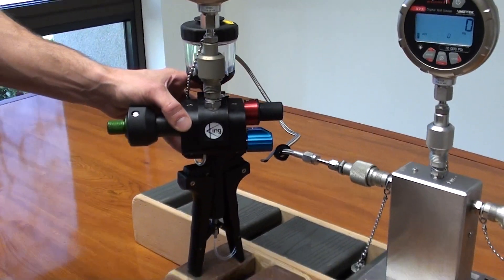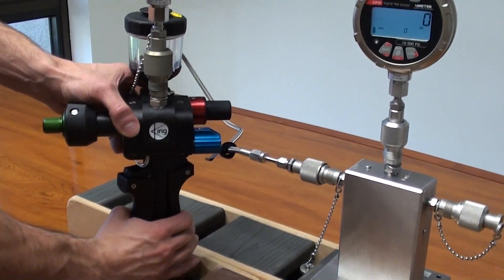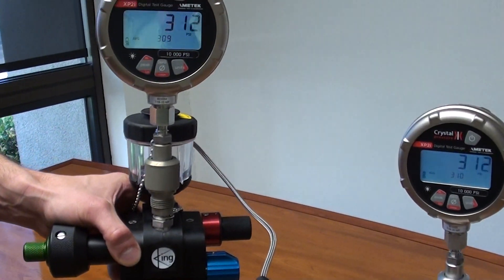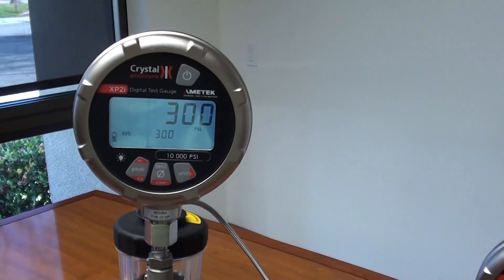Next we're going to generate a priming pressure by using the scissor handles to apply at least a 300 PSI priming pressure.